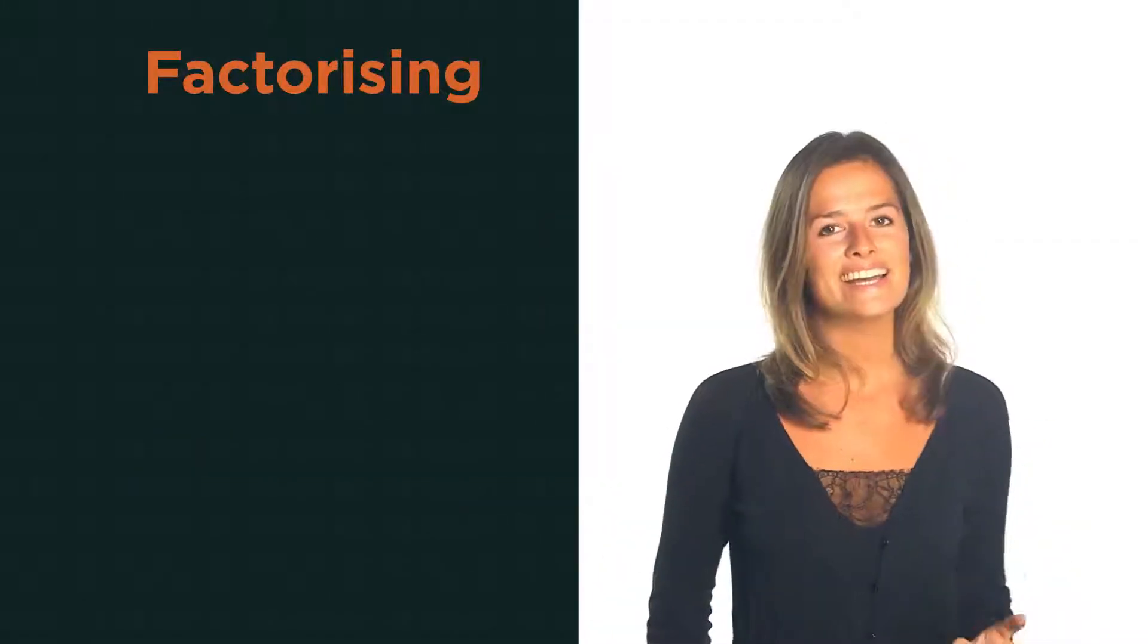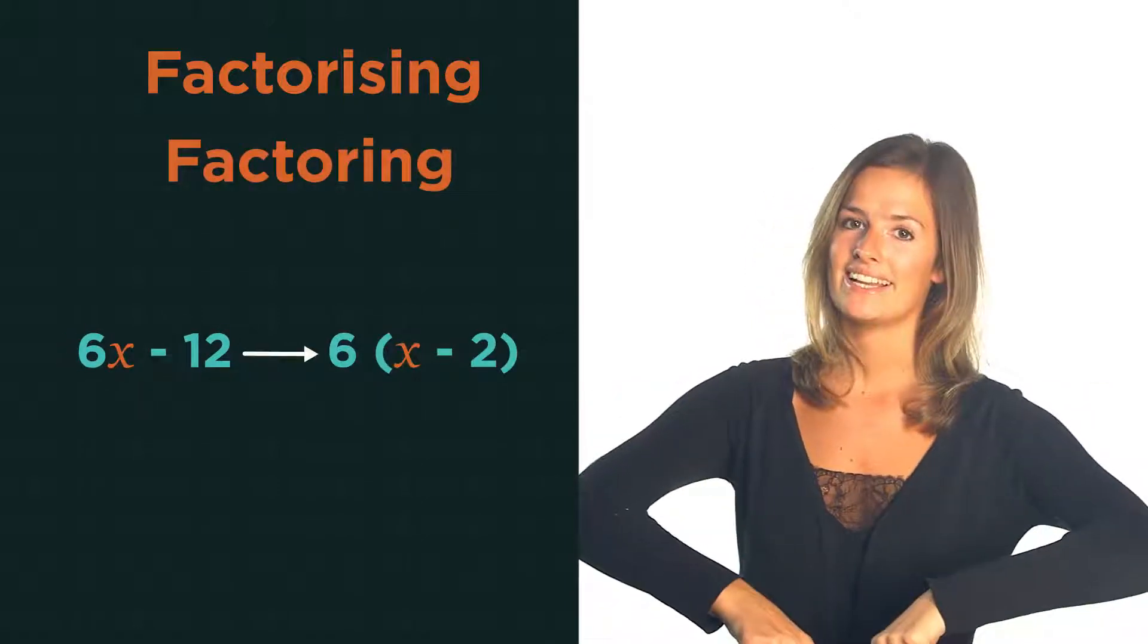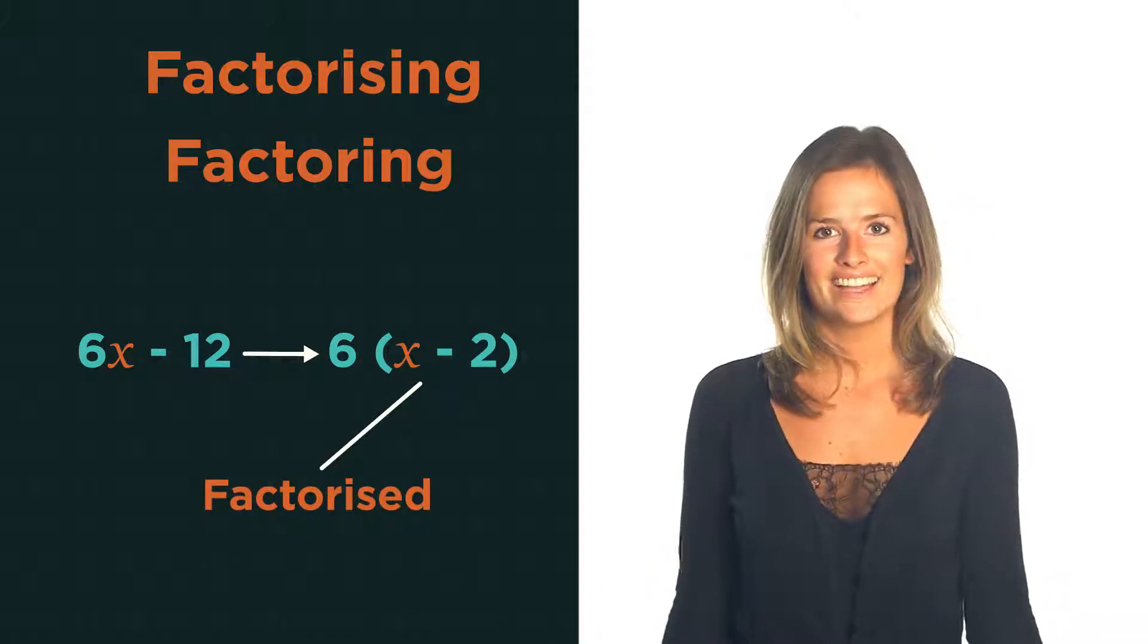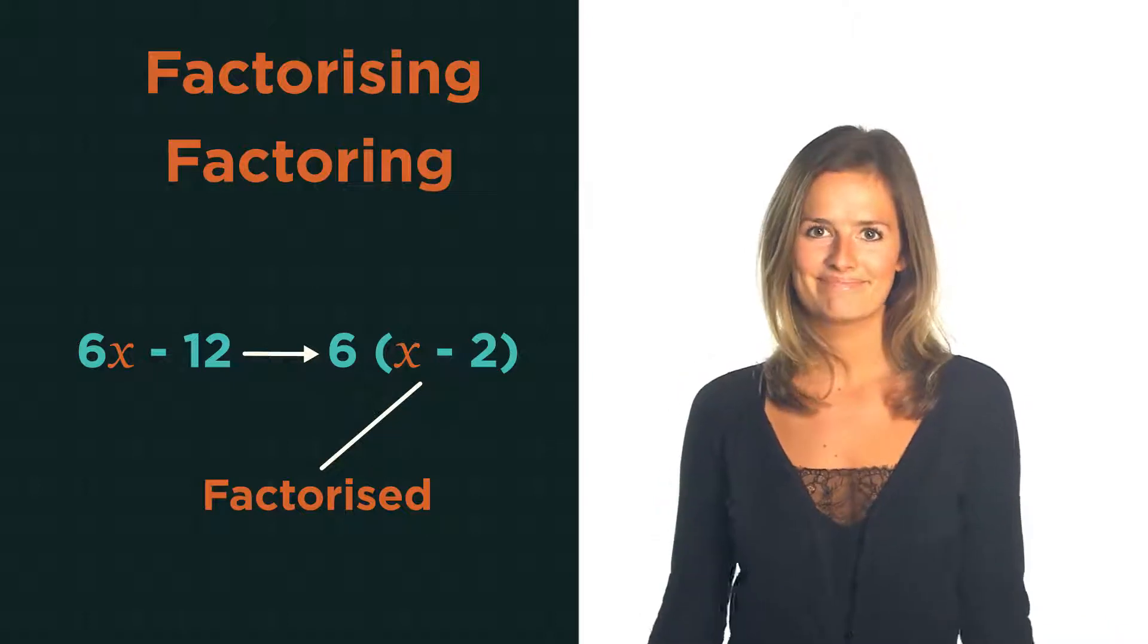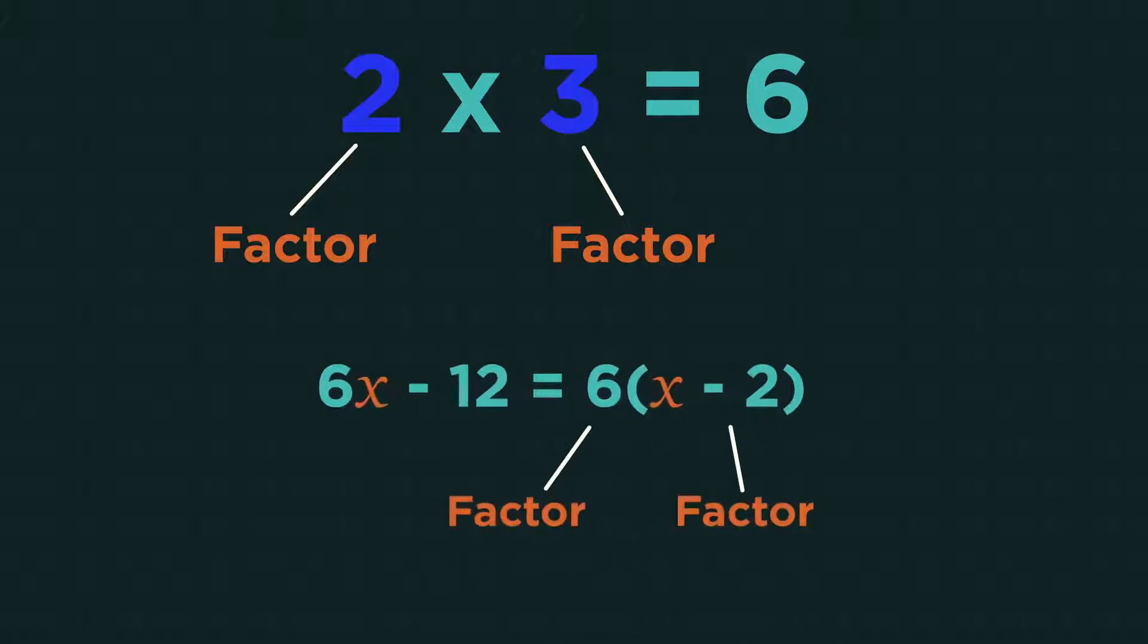In England we call it factorizing, in America it's factoring. They mean to put an expression into brackets. We say it has been factorized. Let's discover what that means and how we do it. Numbers have factors, expressions can also have factors like this and like this.